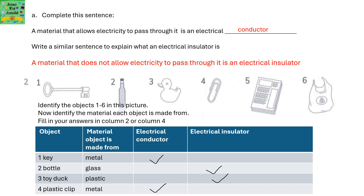The second is a bottle; it's made of glass, so it's an electrical insulator. A toy duck is made of plastic, so it's an electrical insulator. The fourth is a clip — it's a metal clip, so it's an electrical conductor.